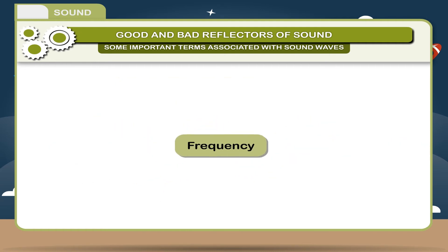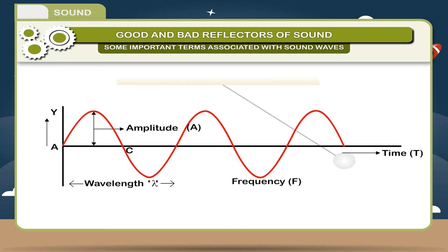4. Frequency: Number of waves passing through a point per second is called frequency. Its unit is hertz. It is denoted by F. F is equal to 1 by T. This is the relation between time period, T, and frequency, F.